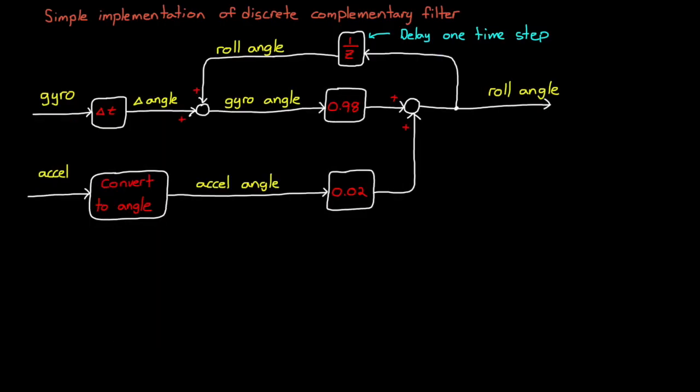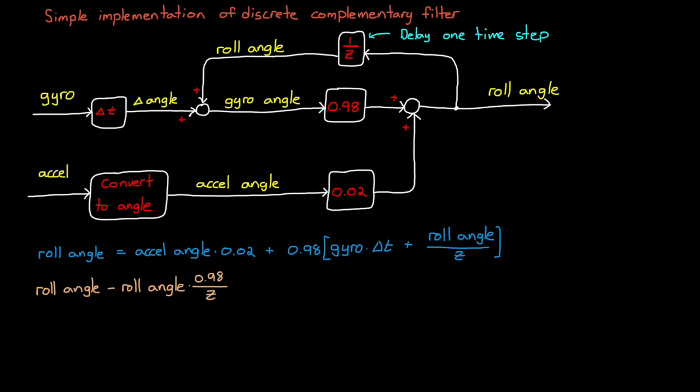Alright, so the question might be why does this implementation that we just walked through appear to work, when there doesn't seem to be an obvious low pass or high pass filter? Well, let's work through the math a bit and reduce this block diagram to see what we get. Now I'm zipping through this pretty quickly, but if you pause the video you can follow along with the algebraic steps.